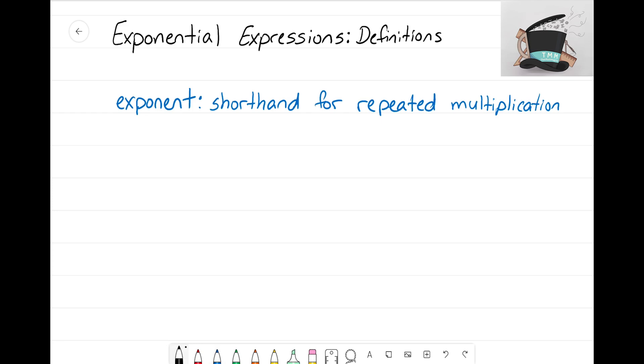For example, let's say I had the exponential expression of n to the sixth power. In this expression, the sixth here is my exponent. What that six is referring to is the fact that I'm taking n and I'm multiplying it by itself six times. Because there was a six for the exponent, I'm now multiplying my n six times by itself.